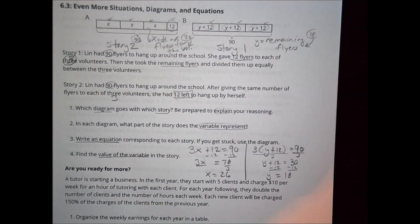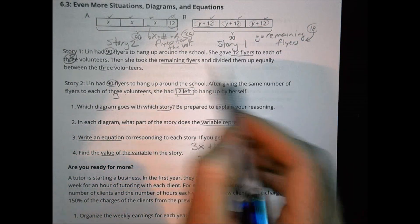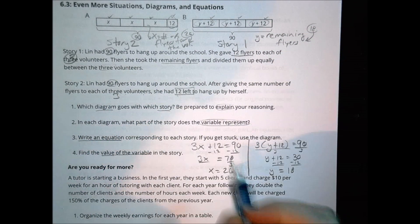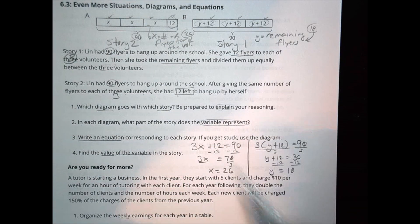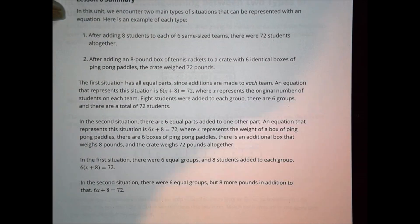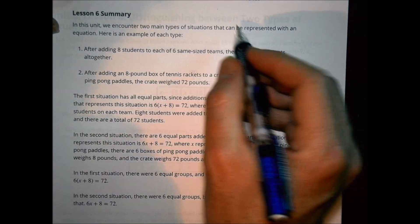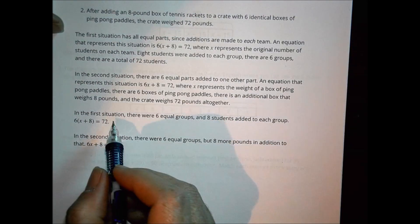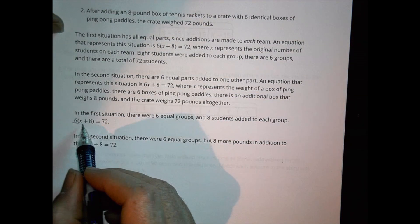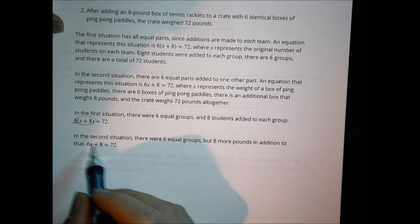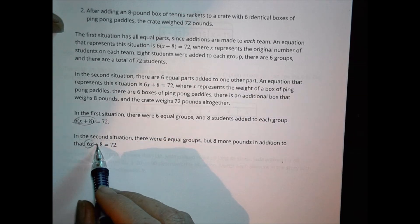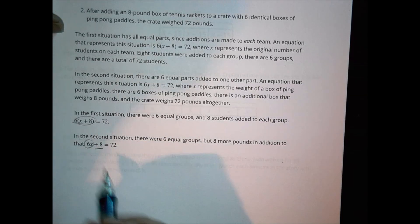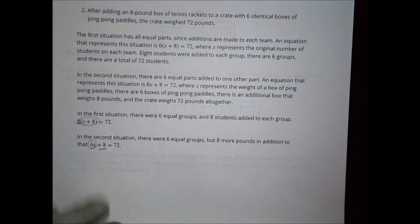So that was today's lesson — looking at a couple different ways you can write these equations, whether you're using parentheses or not. In summary, there are two main types of situations that can be represented with an equation. We can have 6 times the quantity X plus 8, or we could have just 6 equal groups with an additional amount added — different ways to show some variety.